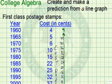Now we want to create and make a prediction from a line graph. This is where mathematics becomes powerful — to be able to make predictions. Let's take, for example, first class postage.